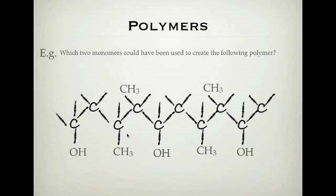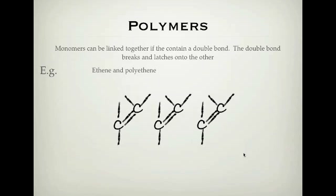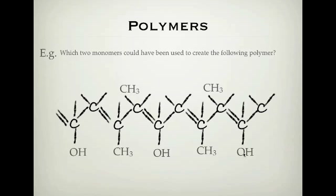To work out what monomers were used to create this polymer, we do the opposite of before. Instead of creating the long chain, we cut it up into smaller chains. Step one: put a double bond in every second carbon. Once we have those double bonds in place, we then remove the remaining single bonds between the monomers, which divides it up into the separate monomers. You can see there are three carbons in this monomer, so this is propene.